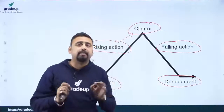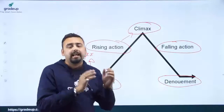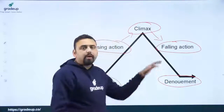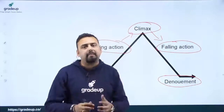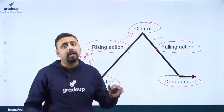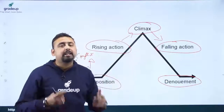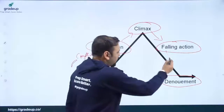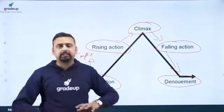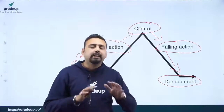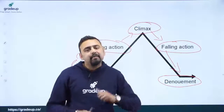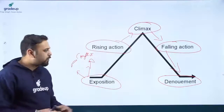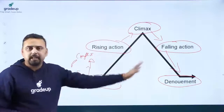At the climax, we reach the highest point of conflict between the protagonist and the antagonist. Then in the falling action, the aftermath of the climax has begun — the primary conflict is over, conflicts are slowing down, and there may be a position of compromise. Finally, in the denouement, if it's a comedy it ends happily for the characters, and if it's a tragedy then the protagonist is doomed.